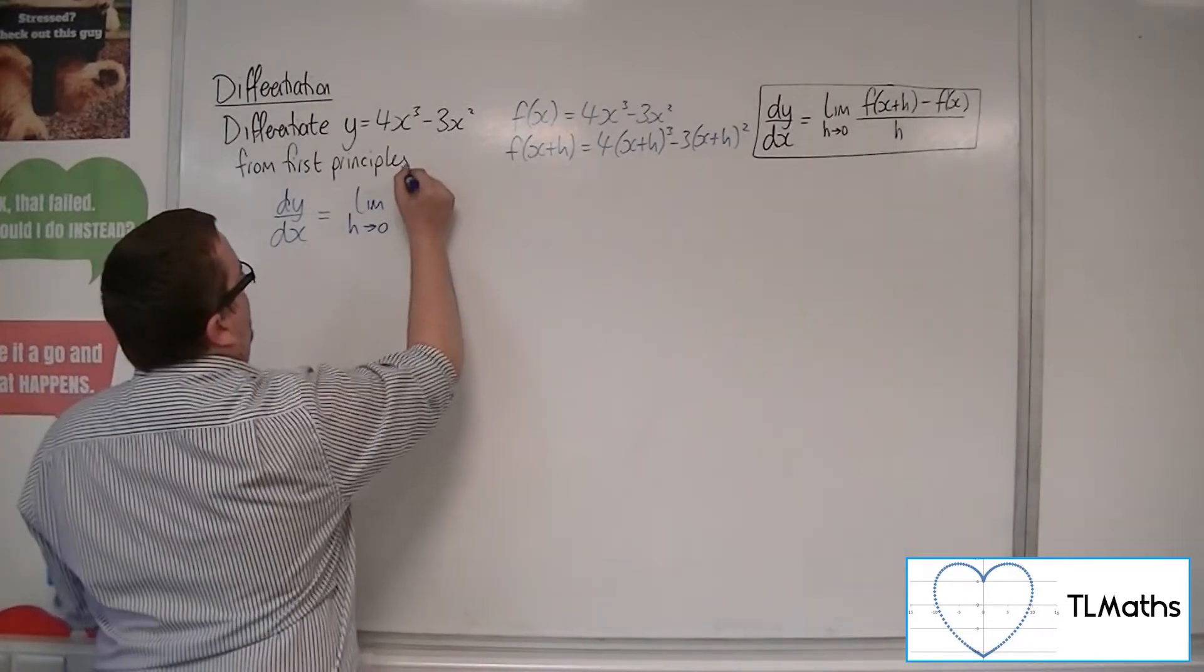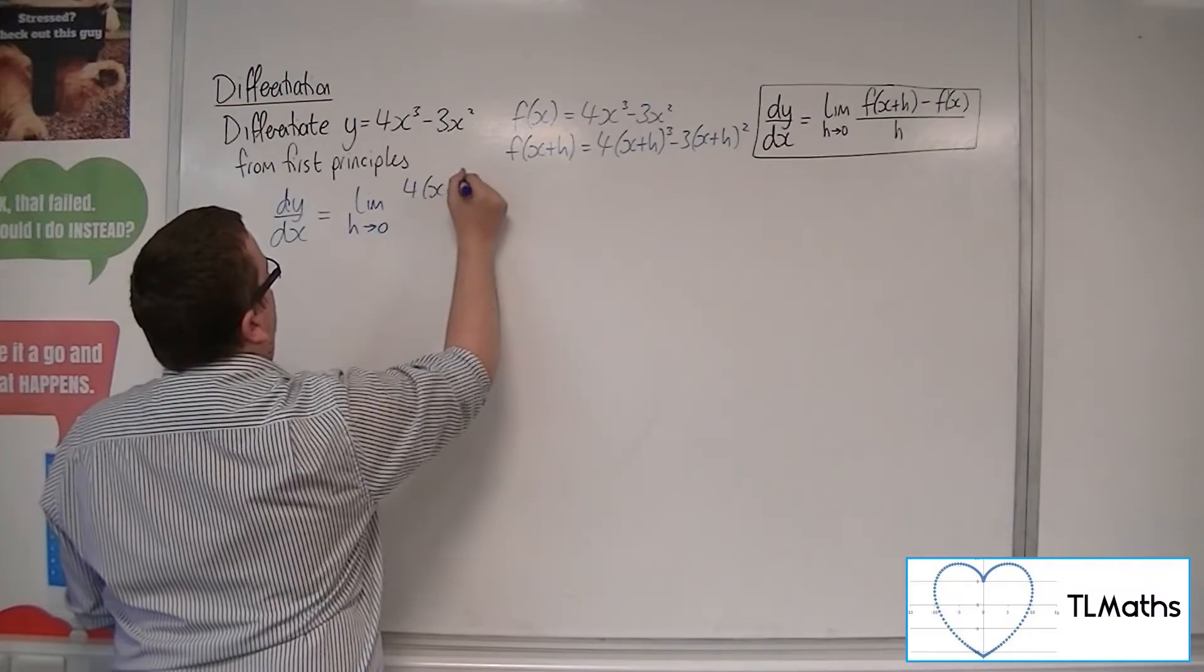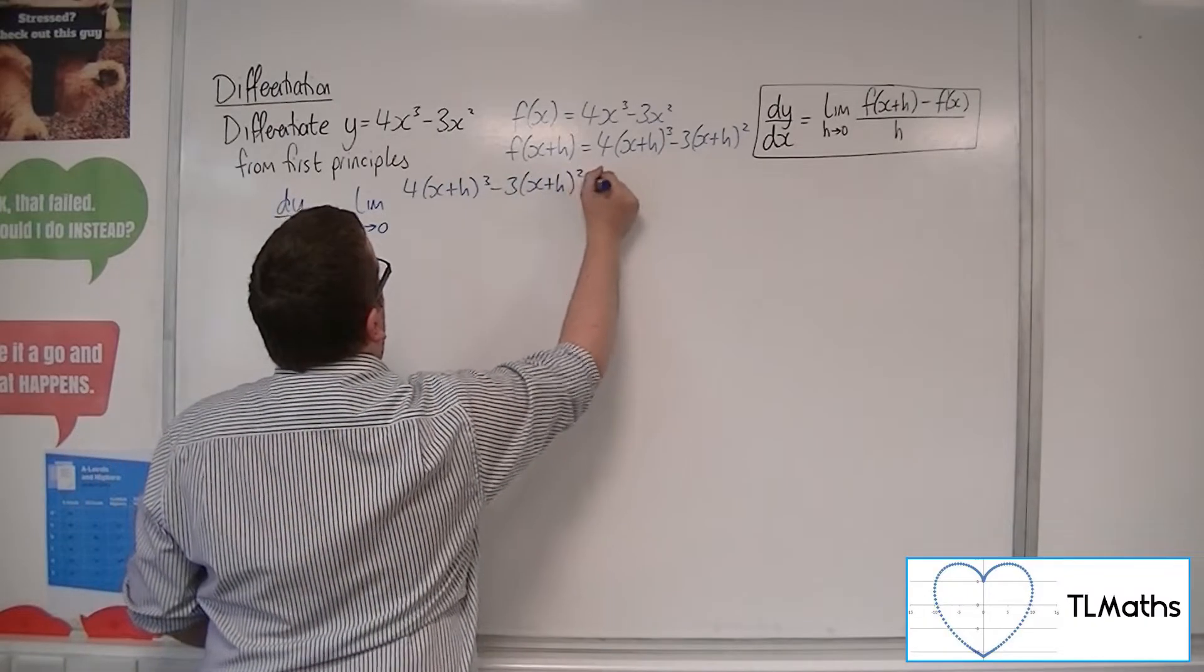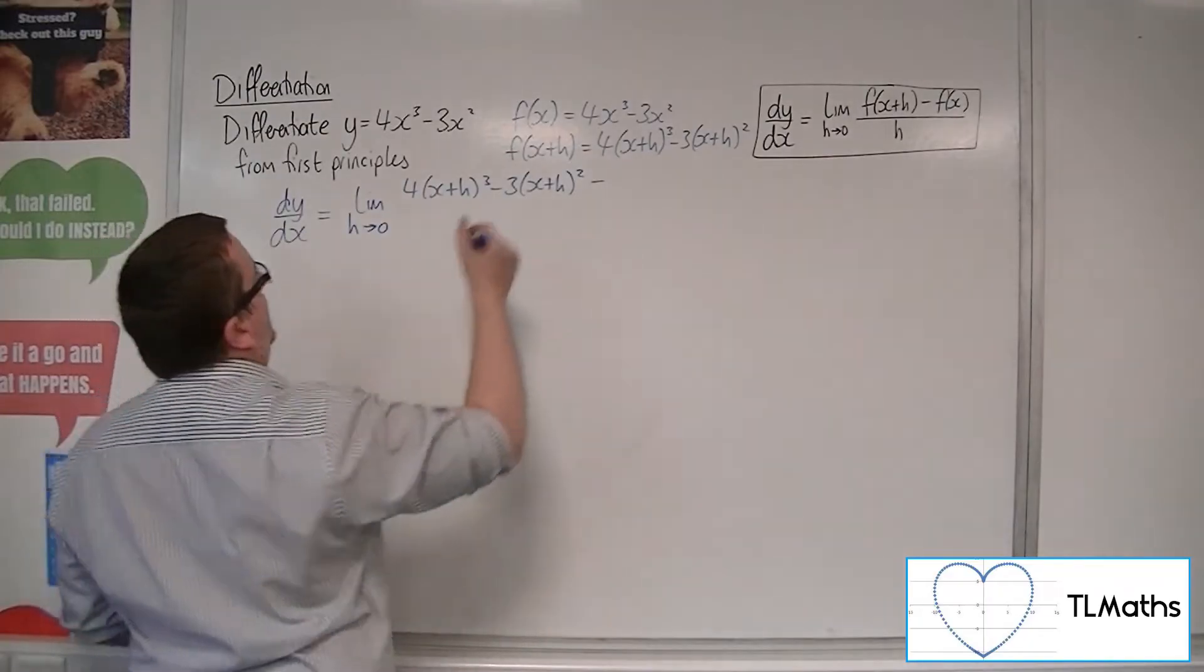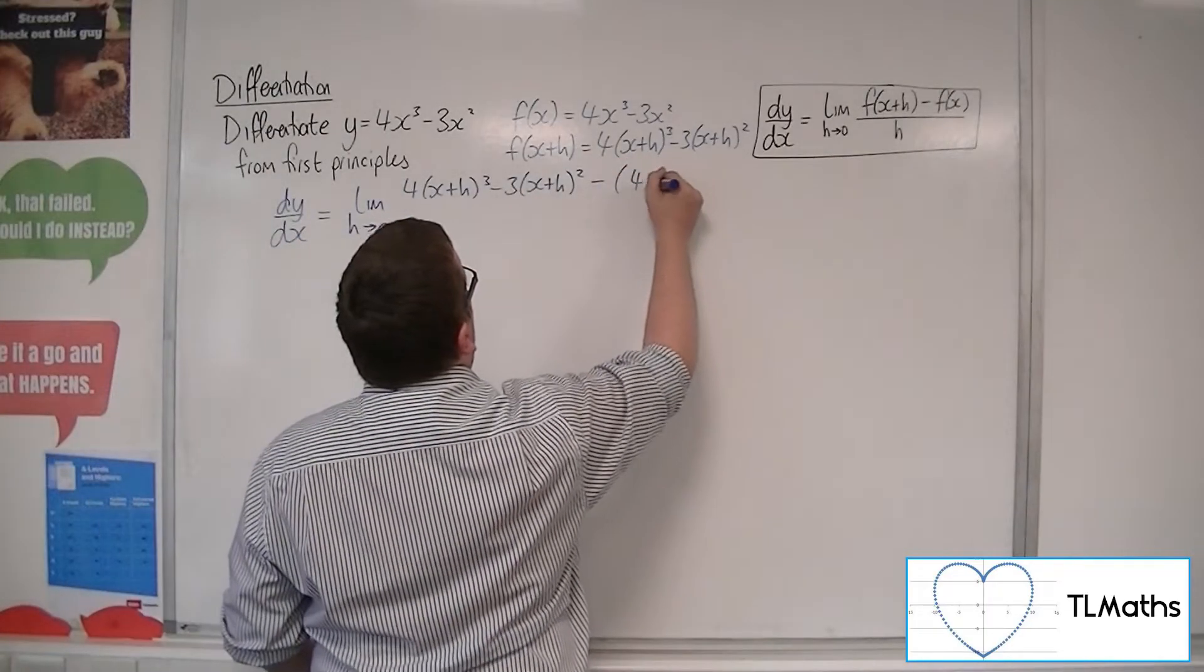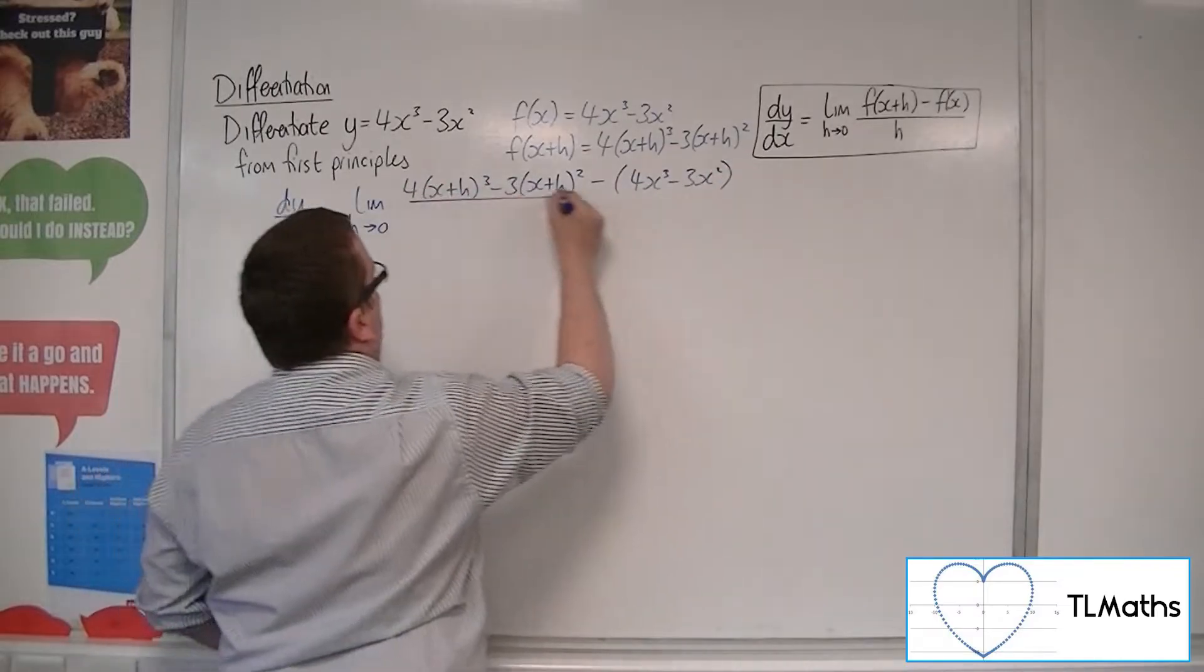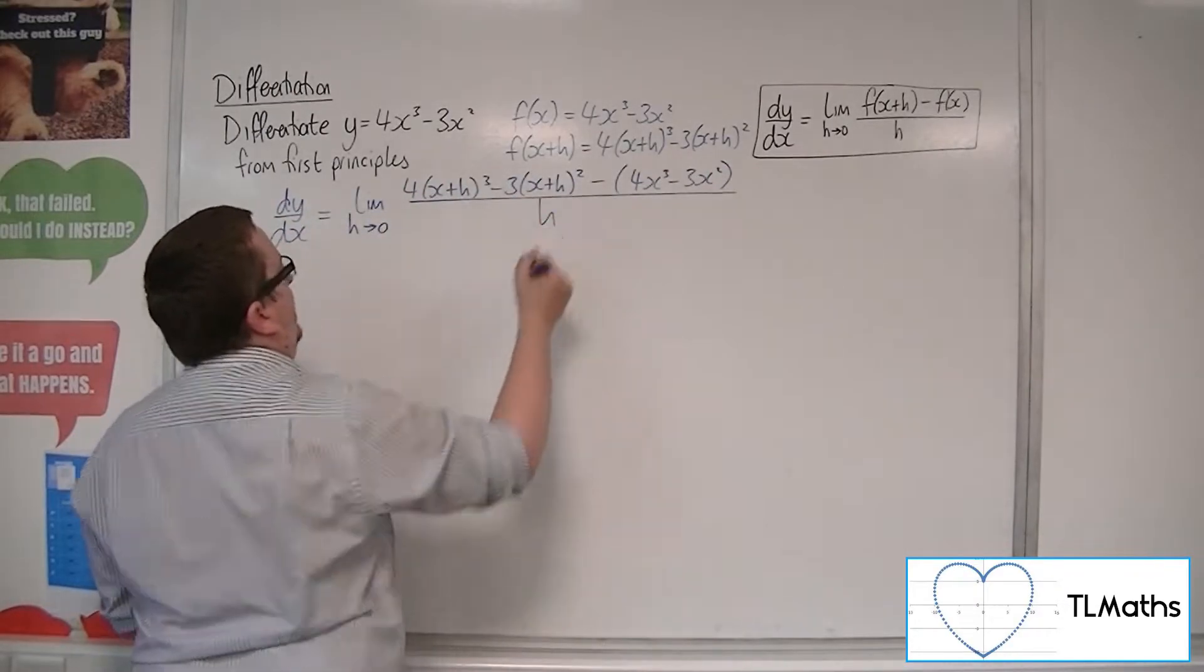So we've got the f of x plus h, and then we're taking away f of x. So I'm going to put that in a bracket because there's more than one term, and then dividing that by h.